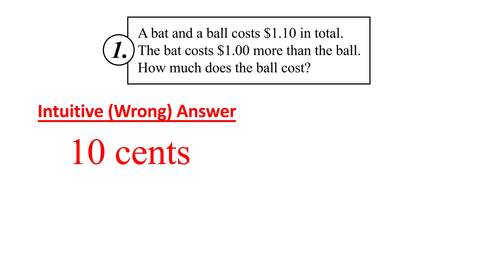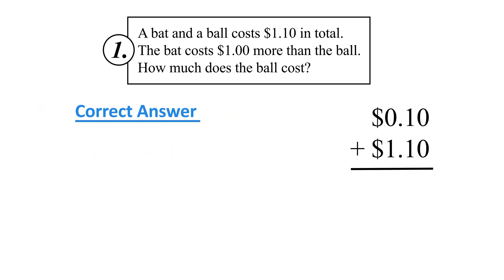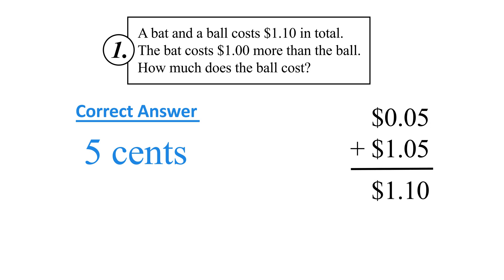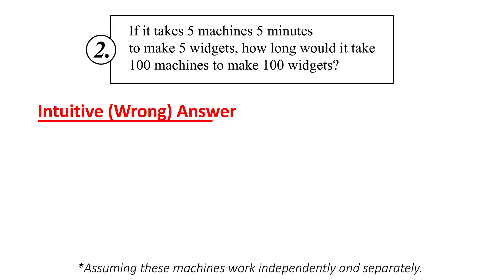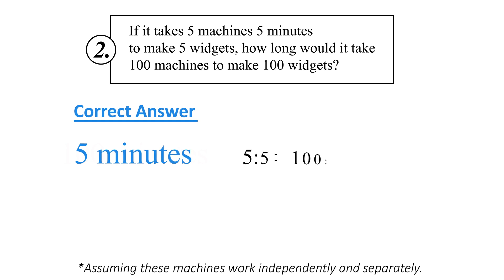The intuitive answer to the first problem is that the ball is 10 cents. But that doesn't work because if the bat is $1 more, that means the bat is $1.10. And once you add $0.10 to $1.10, you get $1.20. The correct answer is that the ball is $0.05 and the bat is $1 more, meaning the bat is $1.05. When you combine those together, they equal $1.10.